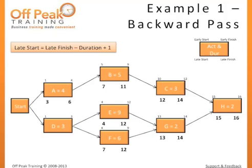Now we have to find the late finish of D. This can be tricky since it has two successors. Task F can start no later than day 7, and Task E can start no later than day 4. Since we do not want to delay the project, we will have to finish D before both of these dates. Therefore, the latest we can finish D will be the end of the third day, so neither the late start for E nor F will be affected. Using our formula, 3 minus 3 plus 1, gives a late start of 1.